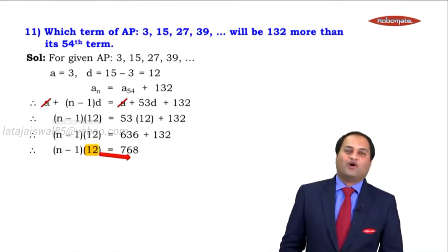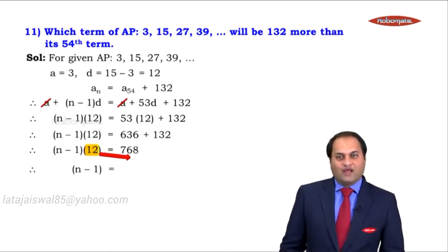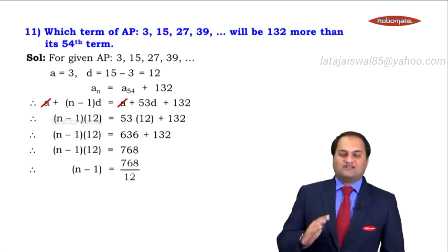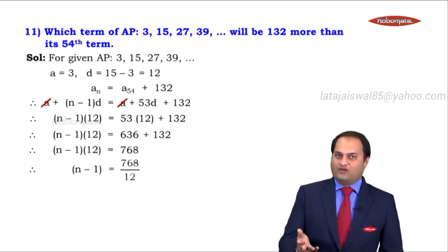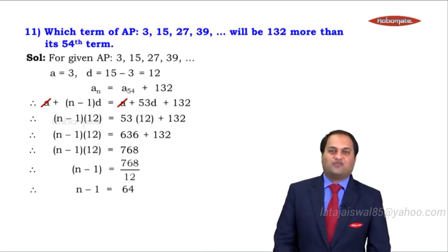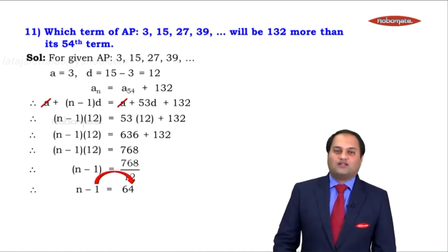Now what do we do? Take that 12 to the denominator. So what do we get? (n minus 1) is equal to 768 upon 12. 12, 6 are 72, 48, 12, 4 is 48. So (n minus 1) is equal to 64.